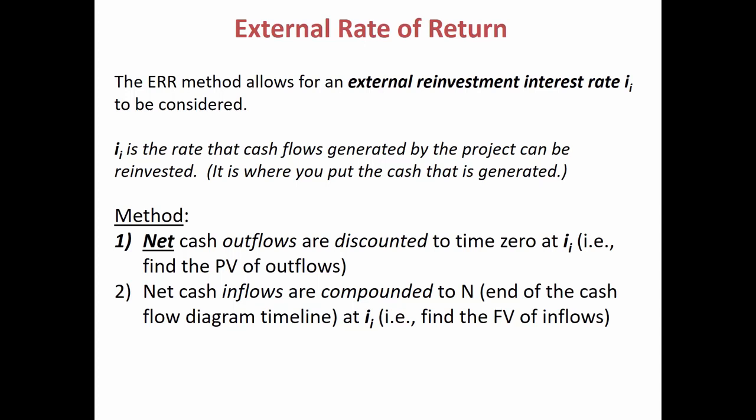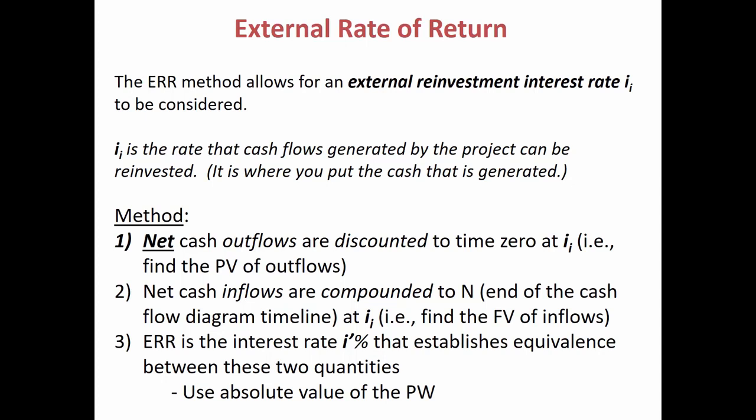Now, the inflows get moved to the future. So the inflows are compounded to the end of the cash flow diagram, to year N. And so you again use that same external reinvestment rate, I sub I, to do that conversion. And then step three, to solve for the external rate of return, you're having to solve for some unknown interest rate that brings the inflows and the outflows into equilibrium. And so the best way to do that is those amounts that you took to the future, the inflows that were compounded to the future using the external reinvestment rate, discount them to the present at some guess interest rate, and then play around with the guess until the inflows and the outflows are equal at the present.